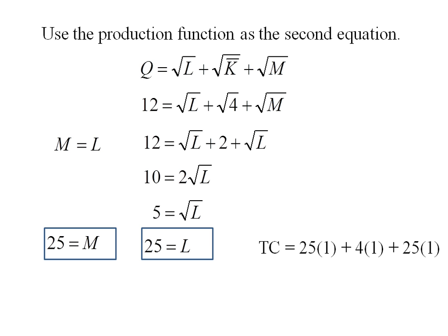Total cost then in this case will be 25 times a dollar plus 4 times a dollar plus 25 times a dollar, or the total cost is $54. So that's the minimum cost for this firm in the short run when capital is fixed and they get to choose the amount of labor and materials.